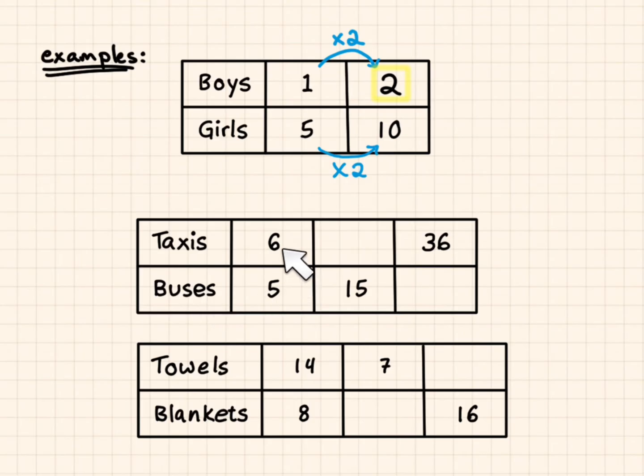Taxis to buses, it's six to five. If I multiply the five by three, I get 15. I also have to multiply the six by three to get 18. That'd be 18 to 15 is an equivalent ratio. If I'm looking at the ratio of 36 taxis and I'm wondering how many buses there are, well, 18 times two gives me 36. I also have to multiply the 15 by two to get 30.